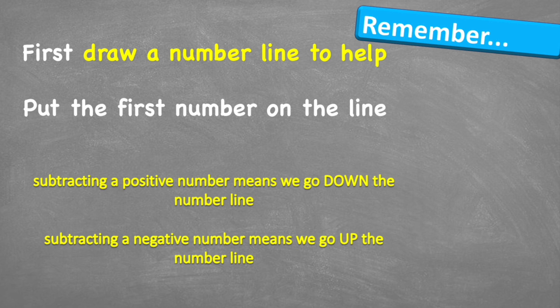So let's think about things to remember in this lesson. First, draw a number line to help you. This will help you visualize what exactly you're doing. Then put the first number on the line before following the rule for the second number. And the rules are: subtracting a positive number means we go down the number line, and subtracting a negative number means we go up the number line.